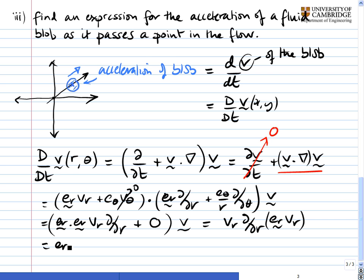so that can come out, e_r to the outside. And then we get v_r d by dr of v_r. Substituting our expression for v_r, we're going to get m over 2πr d by dr of m over 2πr.